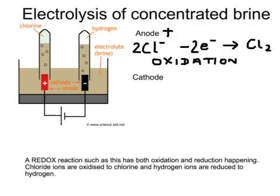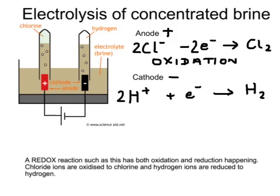At the cathode, which is the negative electrode, hydrogen ions and sodium ions are attracted. It's the hydrogen ions which are discharged. Hydrogen ions are H⁺. Each of these gains an electron to form a hydrogen atom, but hydrogen atoms can't exist as atoms on their own — they're H₂ molecules. So two hydrogen ions each need to gain an electron to form H₂.